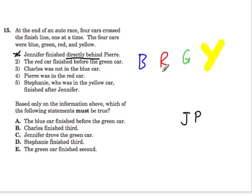The red car finished before the green car. Okay, Charles was not in the blue car. Pierre was in the red car, so I can match up Pierre with red. And let me use this R right here, more colorful.